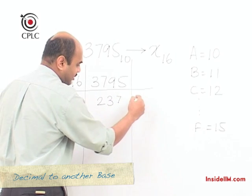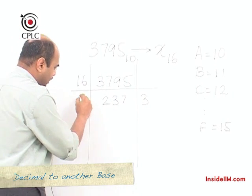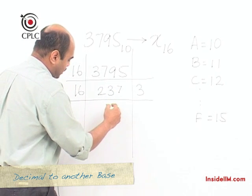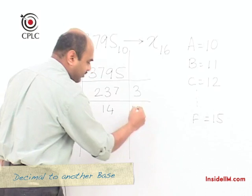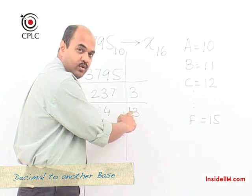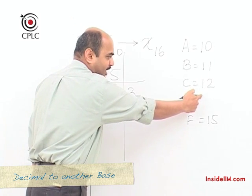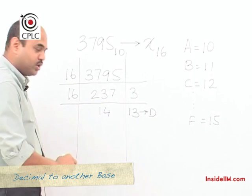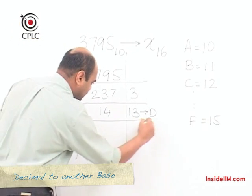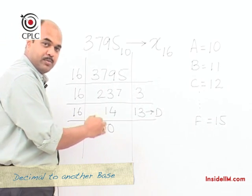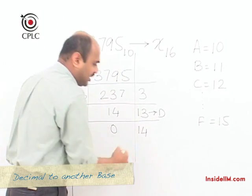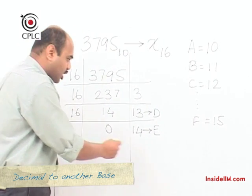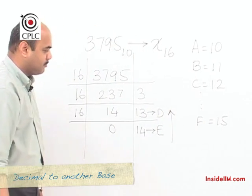Dividing again, I write a quotient of 1 and a remainder of 13. The alphabet equivalent of 13 is D, so this 13 becomes D. Dividing once more by 16, I get a quotient of 0 and a remainder of 14, whose alphabet equivalent is E. The moment you get a quotient of 0 you stop. Taking the remainders in reverse order, 3795 in base 10 converts to ED3 in base 16.